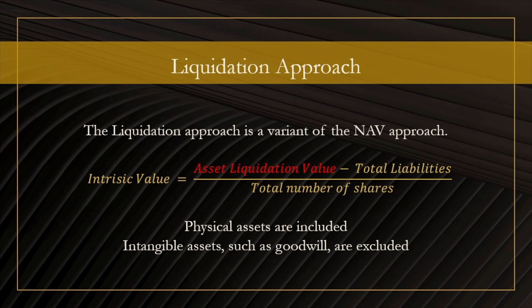Finally, I wanted to briefly discuss a variant of the NAV approach called the liquidation approach. Here we again take the value of assets minus liabilities divided by the number of shares. However, the value of assets is assessed differently — for the liquidation approach, we are only looking at the liquidation value of the assets, meaning the monetary value of company assets that we could realistically liquidate. In particular, intangible assets are counted as worthless, making this valuation more prudent than the NAV approach.